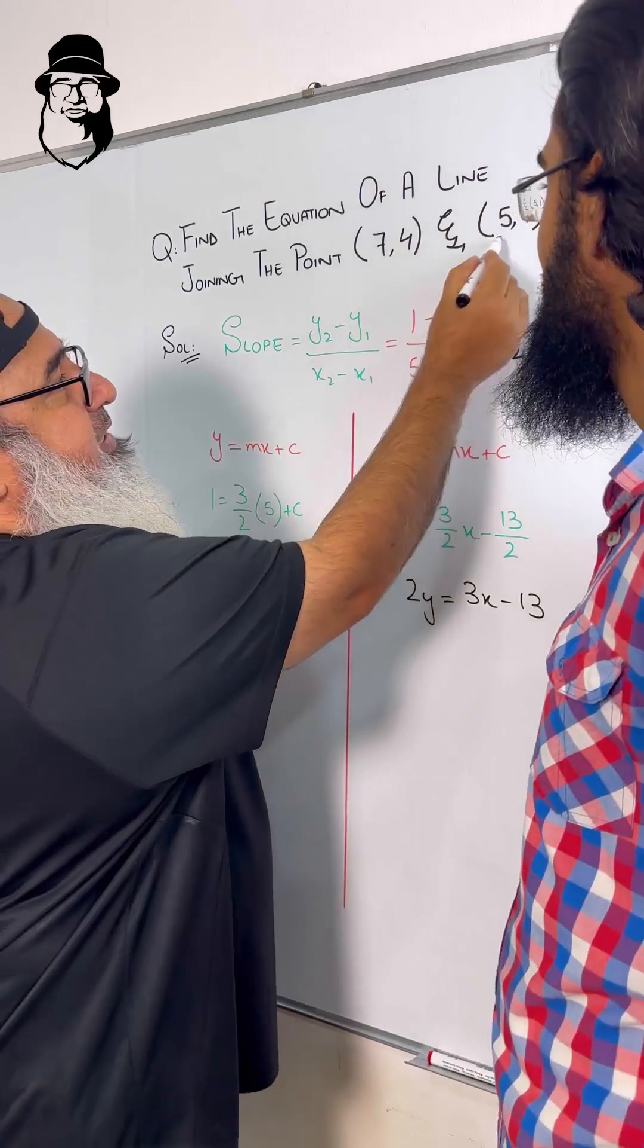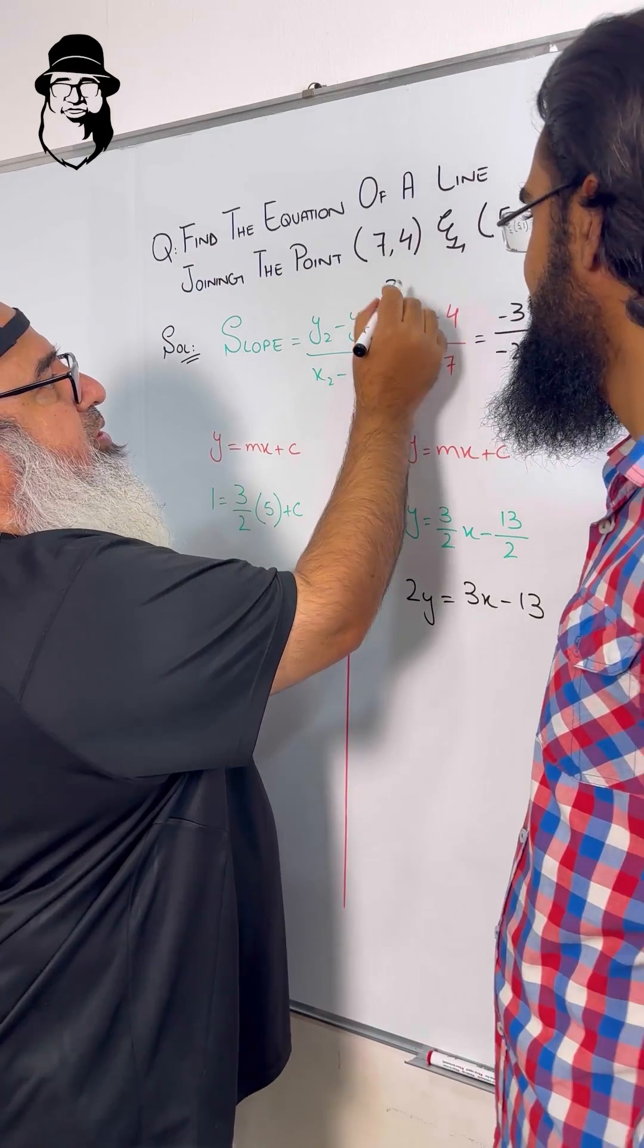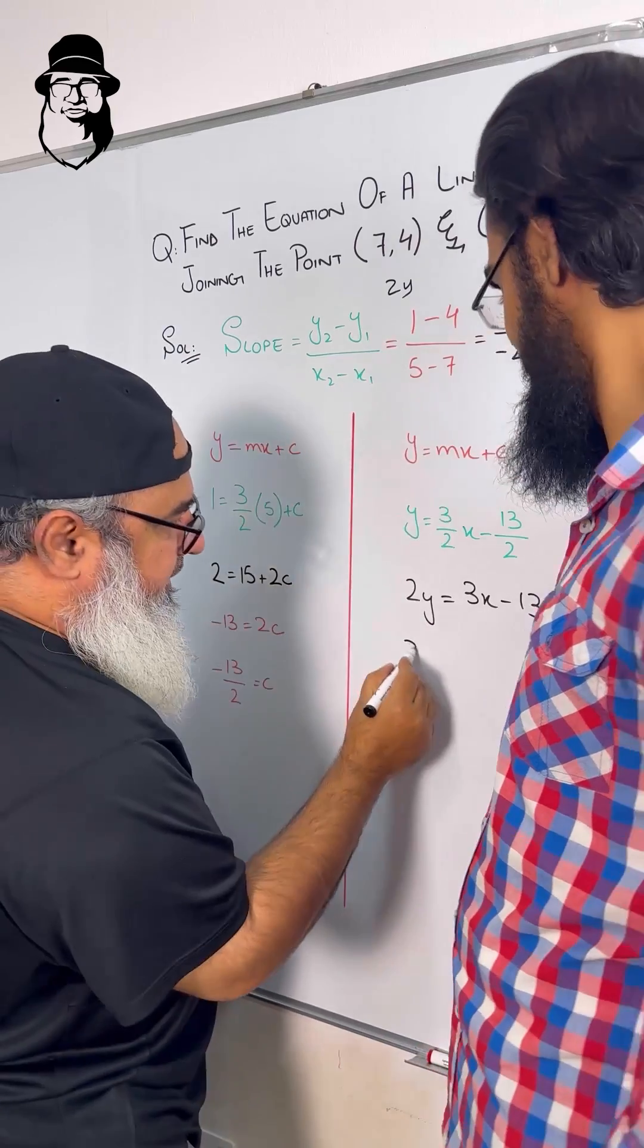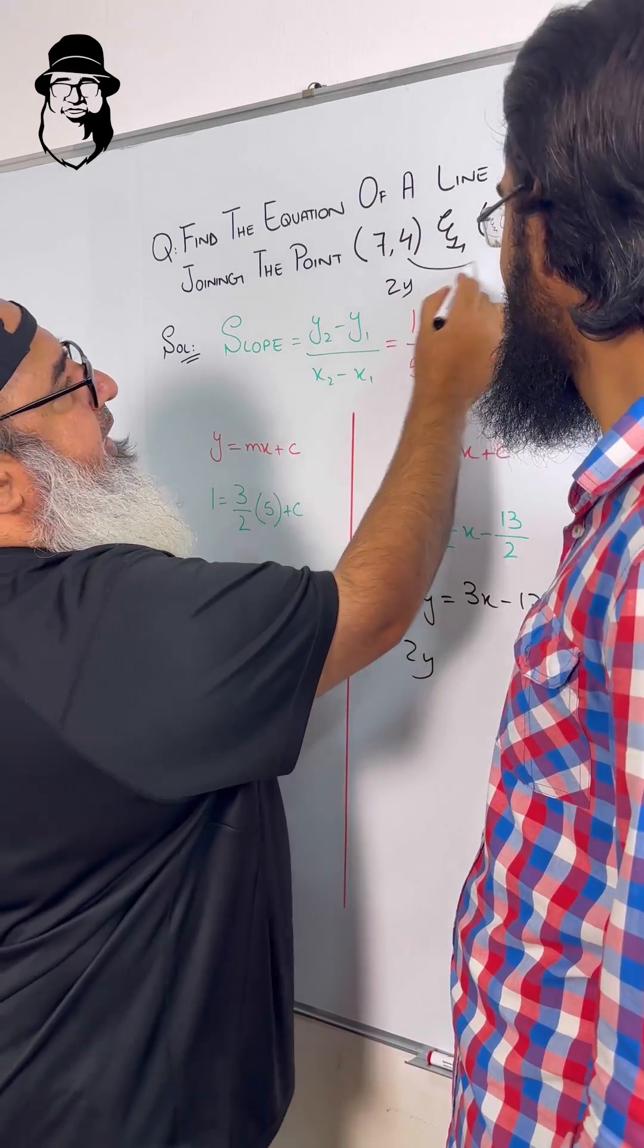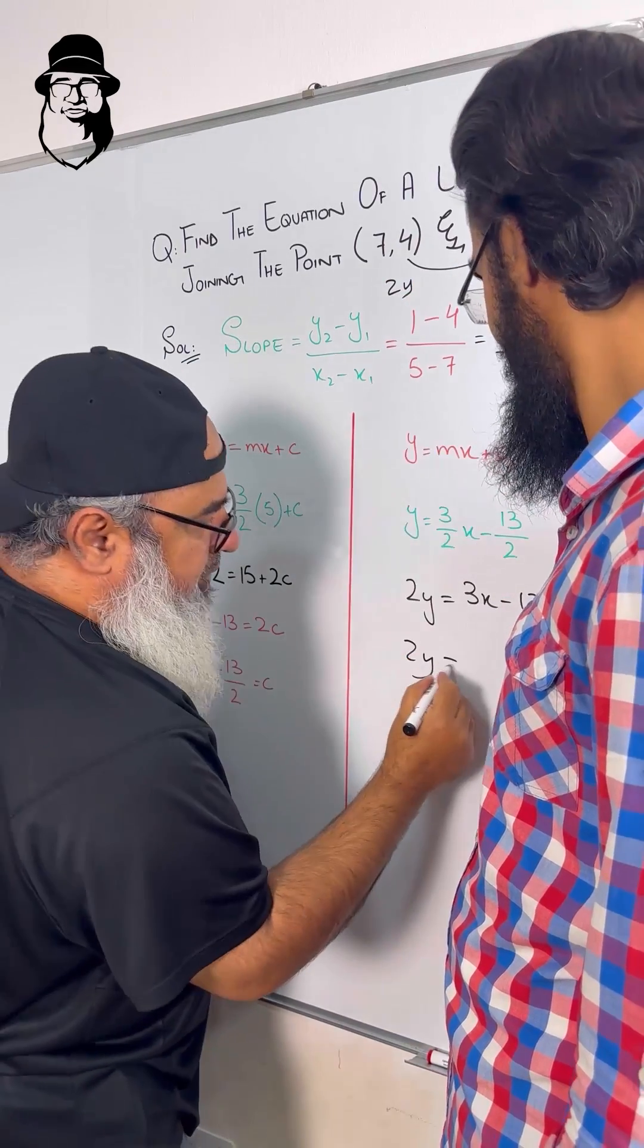Now, 7 minus 5 is 2, so we write 2y. Let's write it here. And 4 minus 1 is 3, so we write 3x.